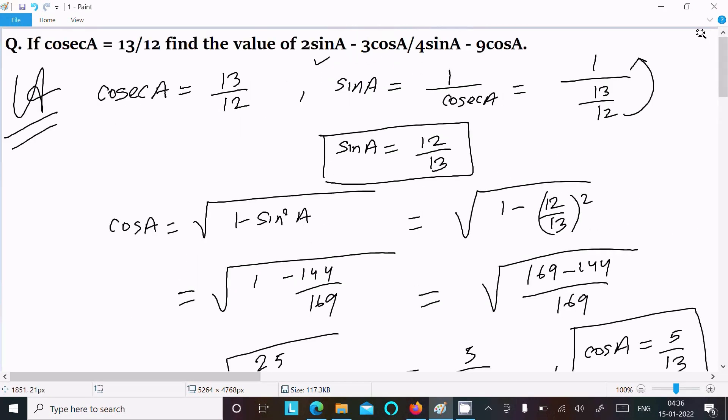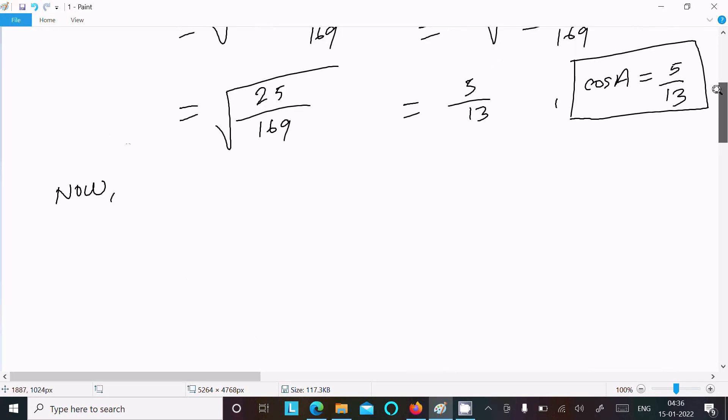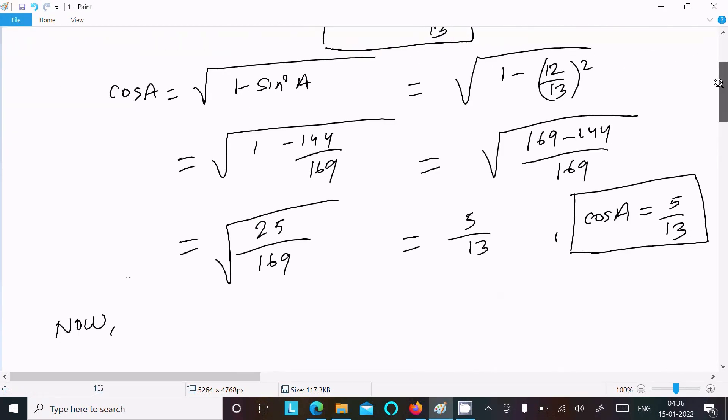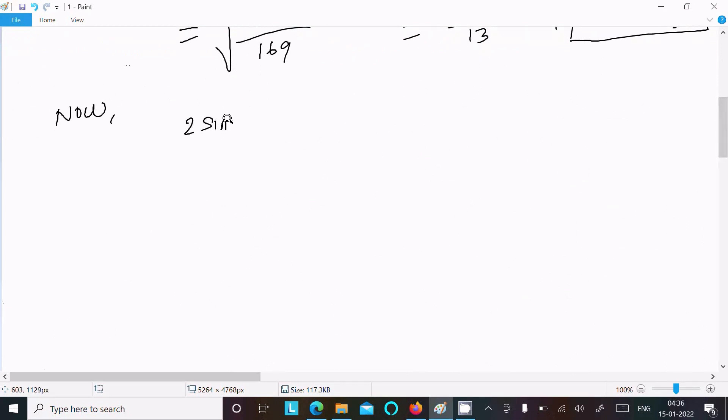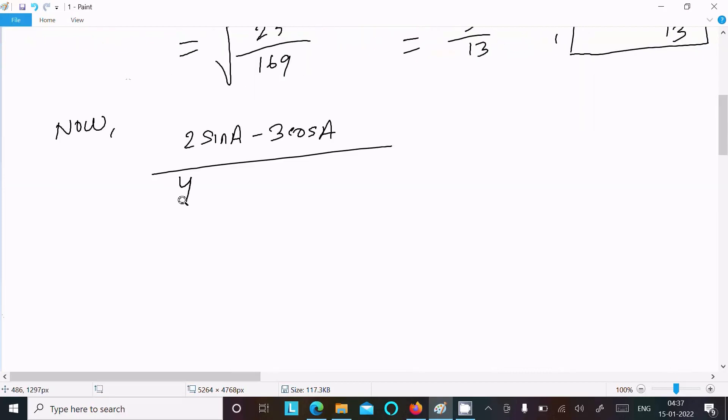Now writing the given expression: 2sinA - 3cosA divided by 4sinA - 9cosA.